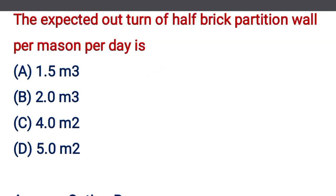The expected outturn of the half-brick partition wall per mason per day is — option A: 1.5 m³, option B: 2 m³, option C: 4 m³, option D: 5 m³. The correct answer is option B, 2 m³.